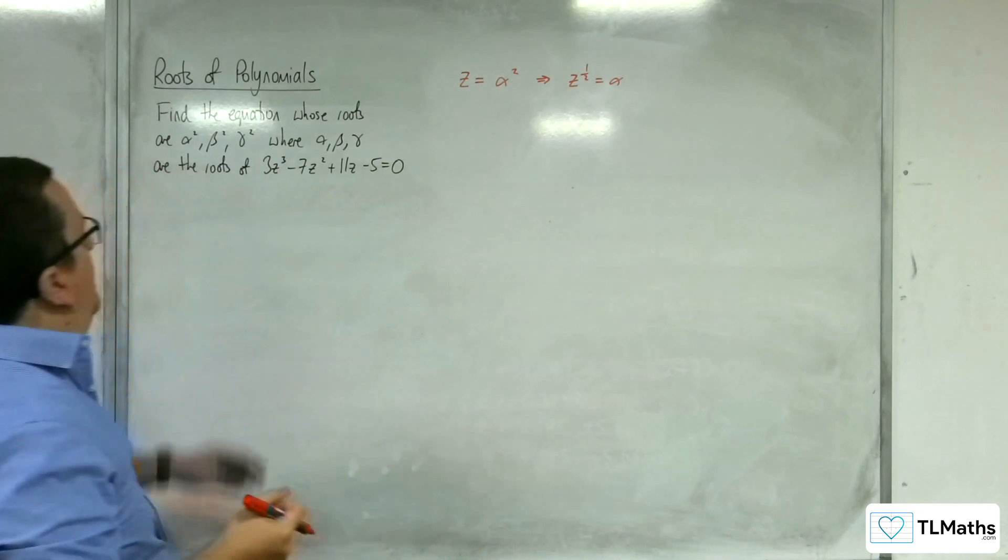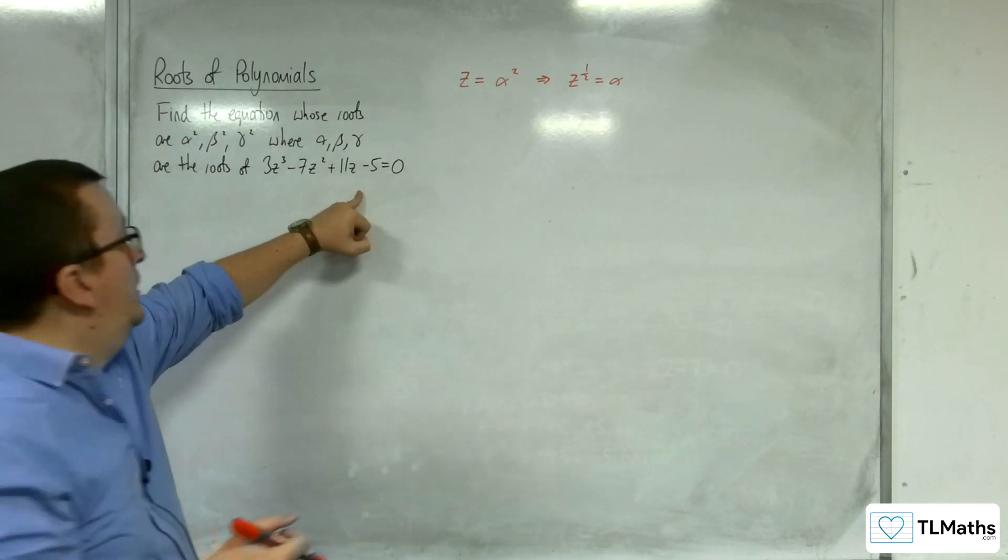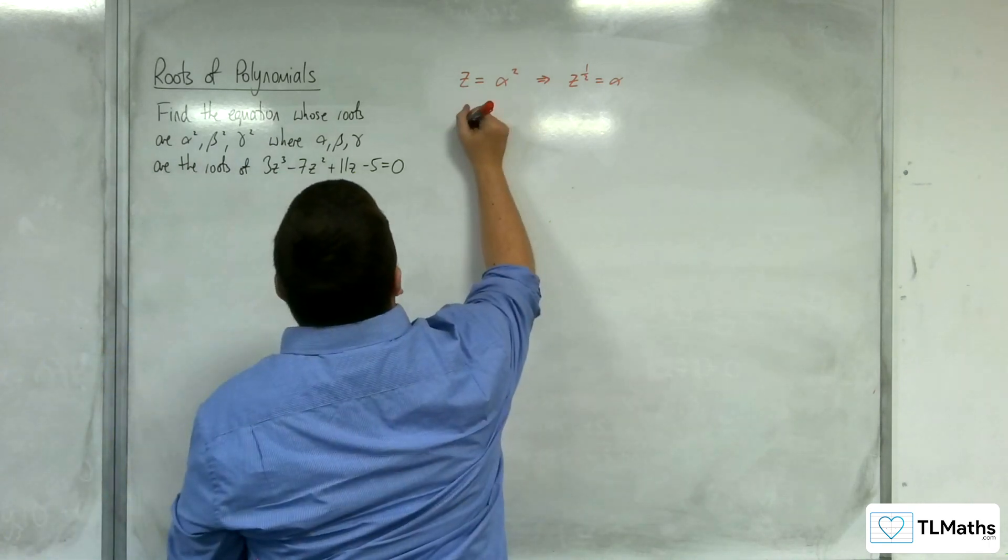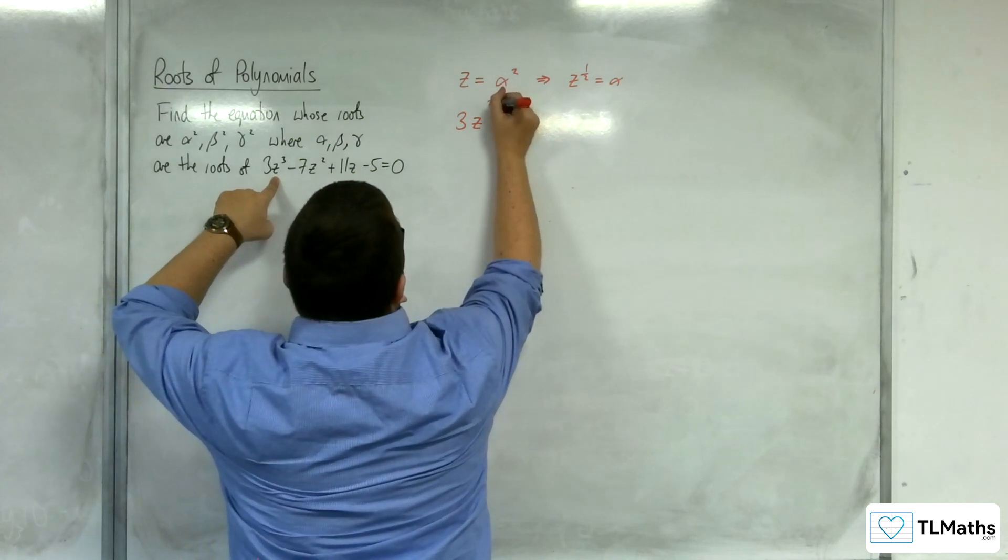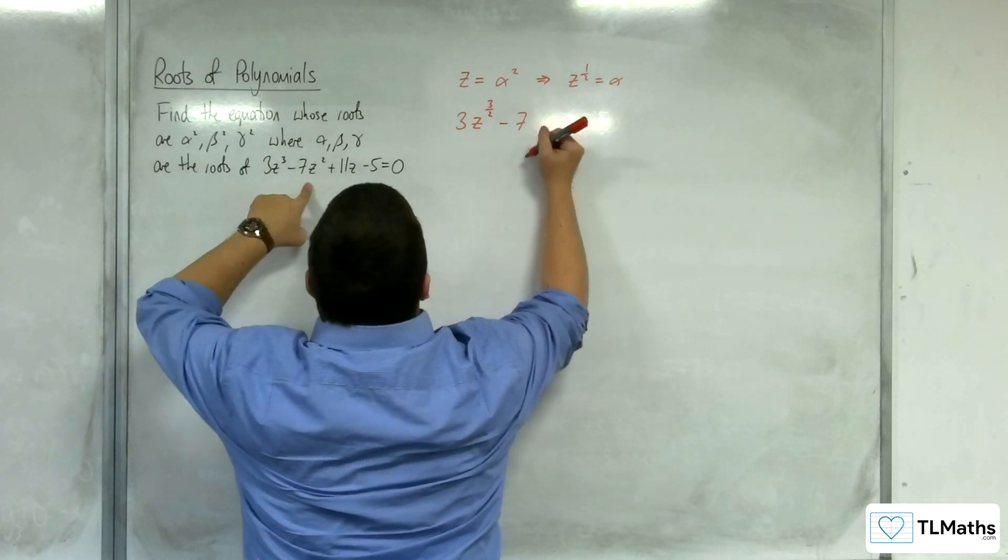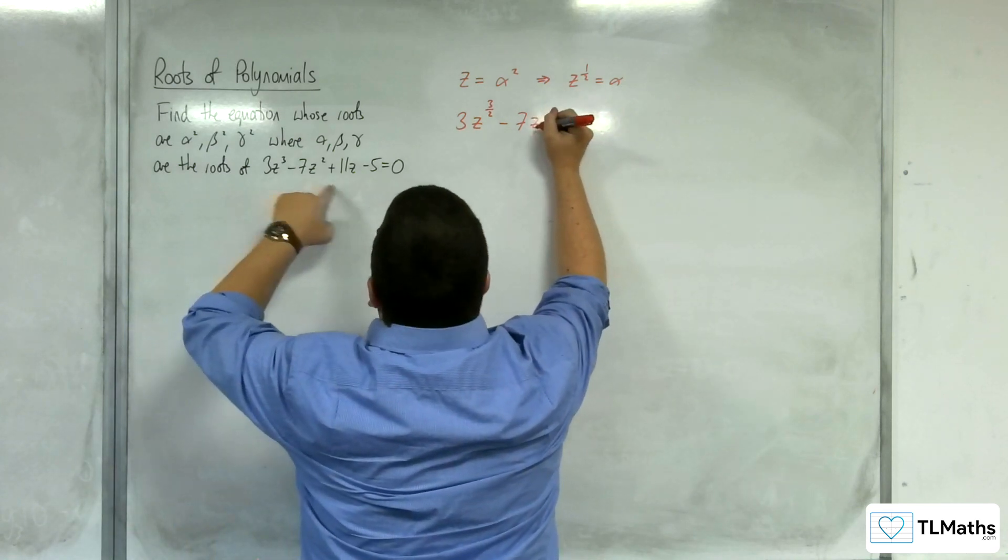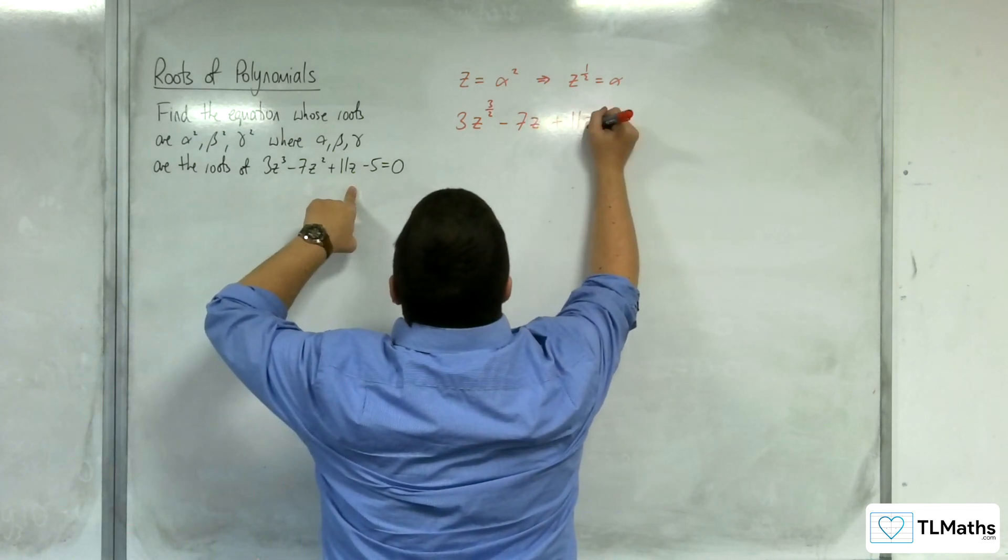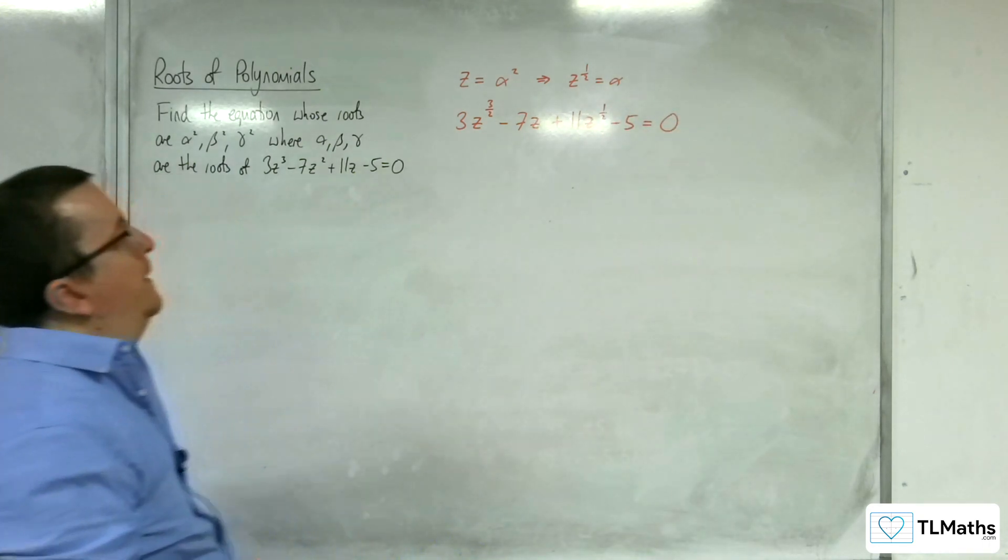If I replace each of the z's here with z to the half, I would get 3 lots of z to the half cubed, so z to the 3 halves, take away 7z squared, so z to the half squared which is 7z, plus 11z to the half, take away 5 equals 0.